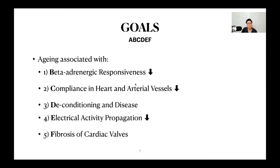What I found was that you could actually summarize all the key changes of aging with a simple mnemonic: A, B, C, D, E, F. A is for aging. B is for beta adrenergic responsiveness, which decreases. C is for a reduction in compliance in the heart and arterial vessels. D is for deconditioning and disease. E is for a reduction in electrical activity propagation. F is for fibrosis and calcification of cardiac valves. When I summarize the information from Power and Camp, I'm going to put them all into one of these categories.